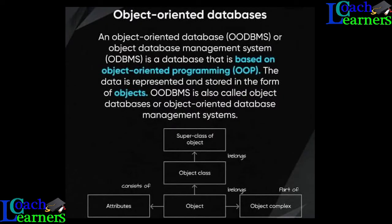The next type is object-oriented databases. Most current databases use the object option. An object-oriented database, or object database management system, is a database based on object-oriented programming. If you are familiar with application development using object-oriented languages, you can understand how this works. Data is represented and stored in the form of objects, and these objects can be linked over the network.